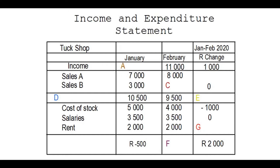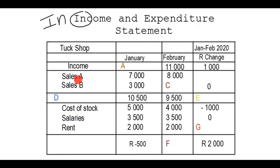In this video we will look at an income and expenditure statement. Let's revise quickly: income is money that you get in. People pay you. In our example we're working with a tuck shop, so all the money we get from our sales — maybe selling cool drinks would be A, and B would be sweets, for example. All that money is income.